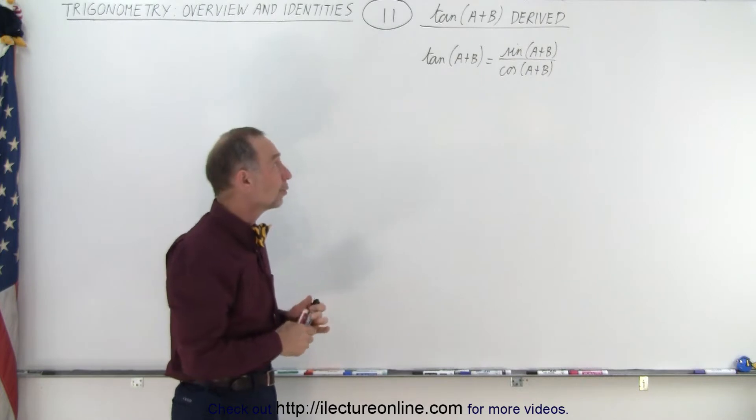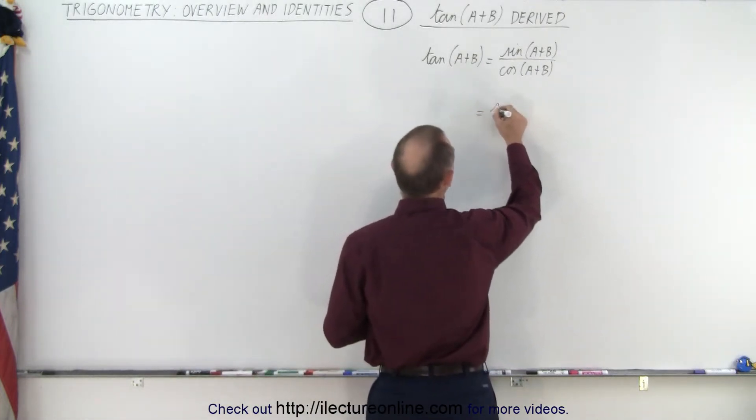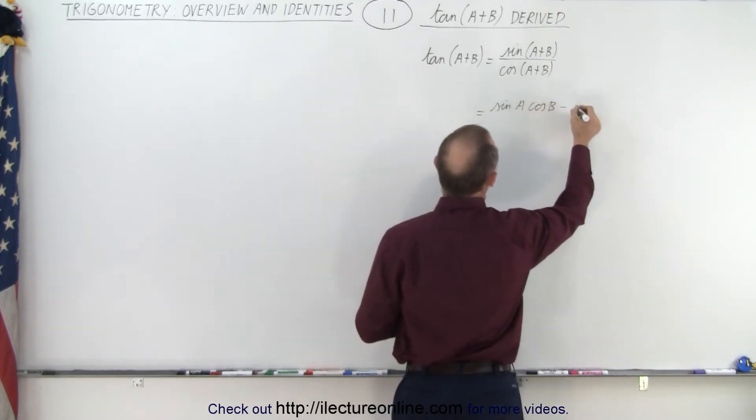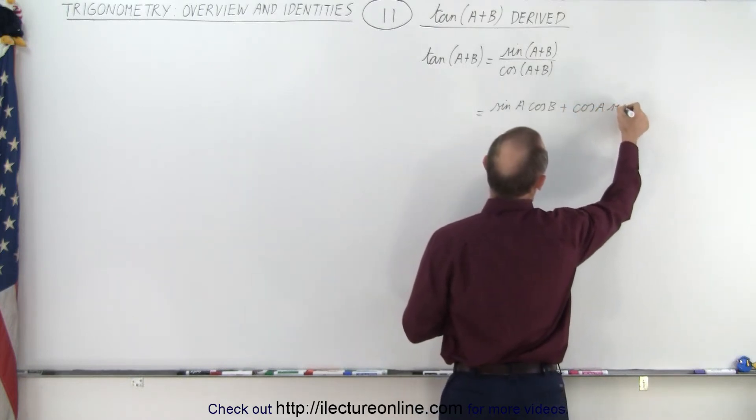let's replace the numerator and denominator by the equivalence of that. So this can be written as the sine of A cosine of B, not minus, plus the cosine of A times the sine of B,